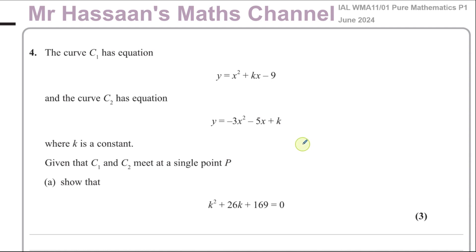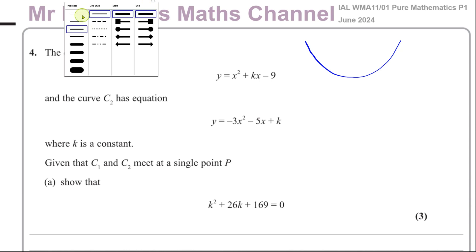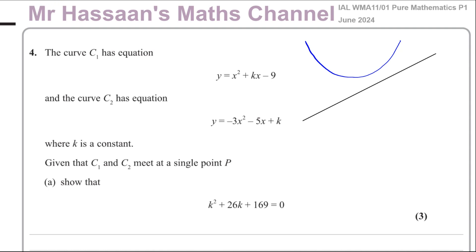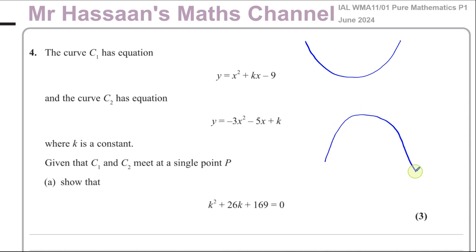In this kind of question, what we're used to seeing is about curves and straight lines — a quadratic curve and a straight line. The straight line would either not touch the curve at all, cut it in two places, or meet it once, in which case it would be a tangent. But in this case, we have two quadratics: one is a smiley face and one is a frowny face — minus 3x squared will be a narrow, upside-down shape compared to the first one.